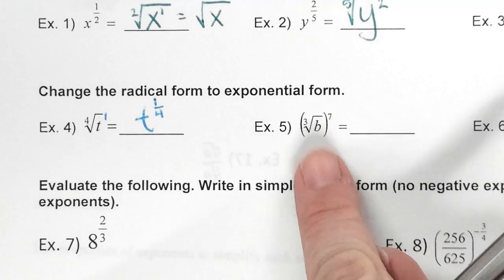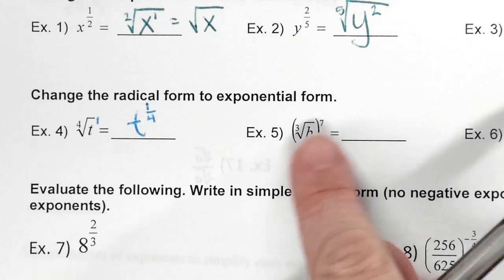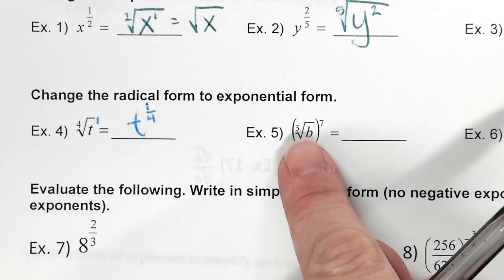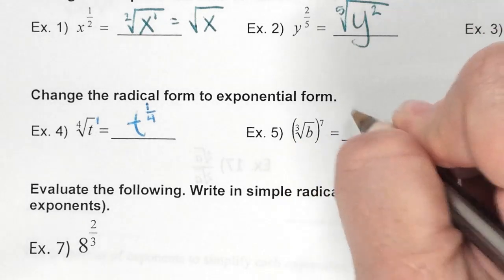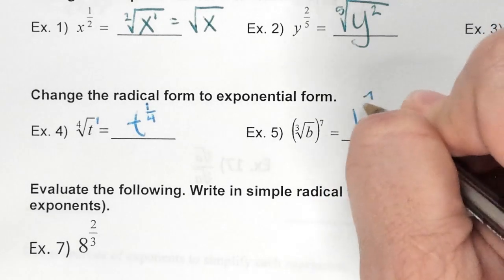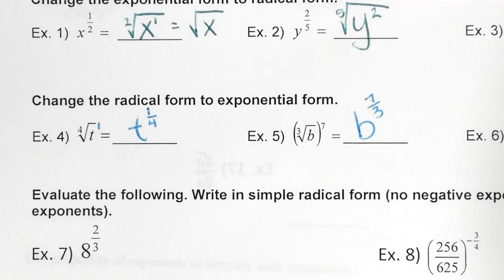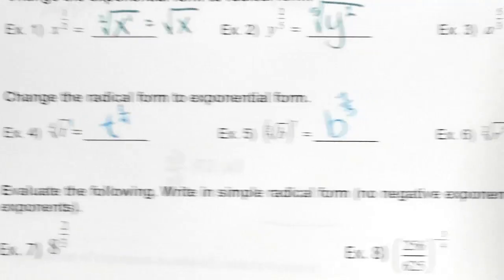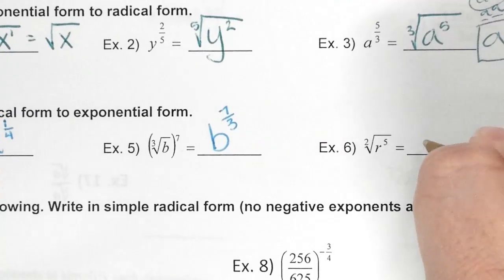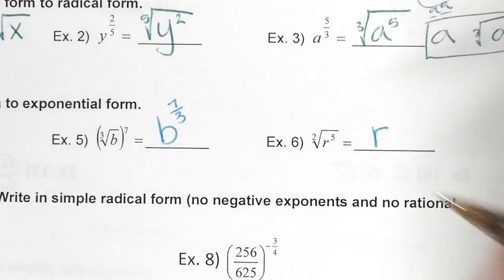For example five, remember the exponent could be outside the parentheses or inside the parentheses — it doesn't matter. What is my fraction here? Seven over three. Remember, roots are on the bottom.